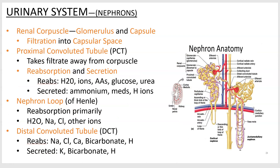Let's look at a nephron. A nephron is the functional unit that filters your blood. This blood vessel here is one of those cortical radiate arteries radiating out into the cortex. Coming off that is an afferent arteriole — afferent means toward — so it goes toward the glomerulus, which is that ball of capillaries. Once blood leaves the glomerulus, those peritubular capillaries surround the nephron, with the vasa recta going deeper down.